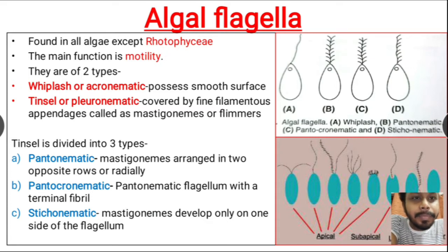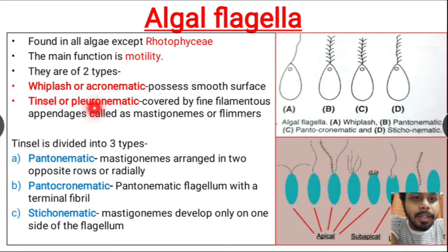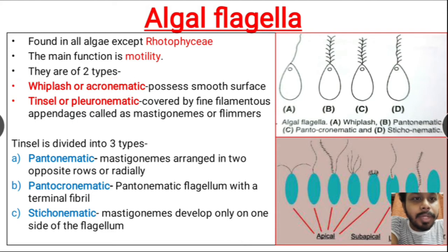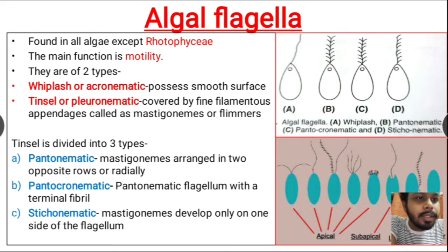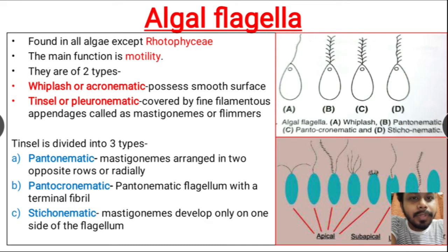Algal flagella are of two types: the first one is whiplash or acronematic, and the second type is tinsel or pleuronomatic. In another way we can say hairless flagella and hairy flagella. Whiplash or acronematic flagella possess a smooth surface — no filaments are present laterally — so they are called hairless flagella or whiplash or acronematic flagella.